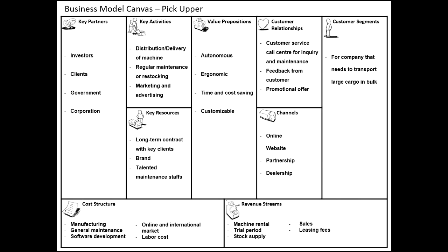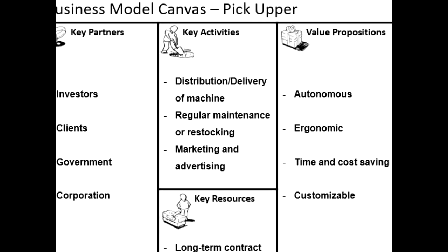Hi, my name is Ayman Hamzi, and I will be explaining about the last three blocks. The first one is key activities — what activities does the value proposition require? For our business, the key activities are: distribution and delivery of the machine, to ensure it arrives at the buyer's place without difficulties; regular maintenance and restocking, to ensure the machine works for a long time; and marketing and advertising, which is equally important to ensure the continuity of the company.